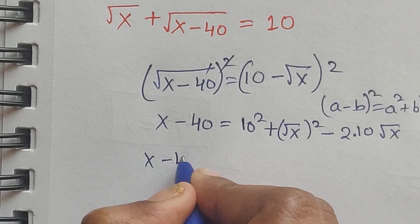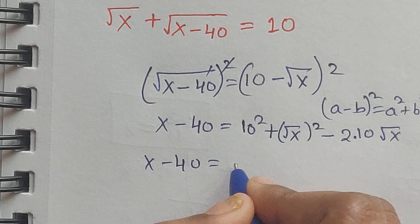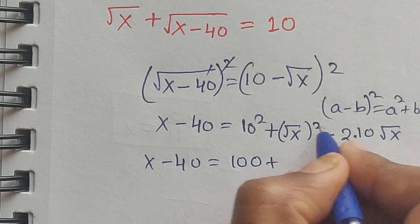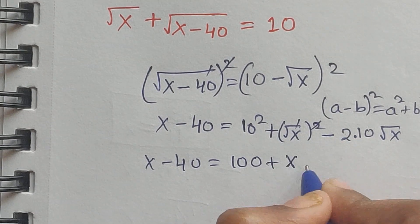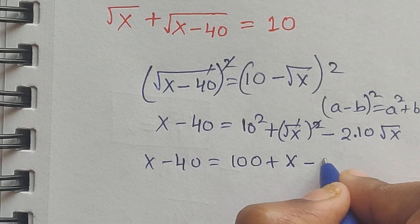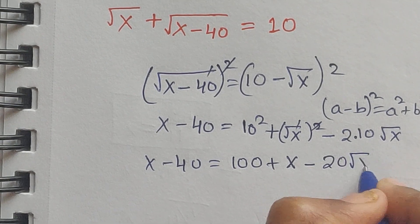So x minus 40 equal to 10 square which is equal to 100 plus square square get cancel x minus 2 times 10 which is equal to 20 square root of x.